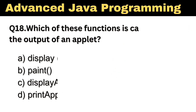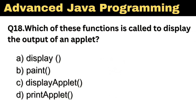Question number 18. Which of these functions is called to display the output of an Applet? The right answer is option B: Paint.